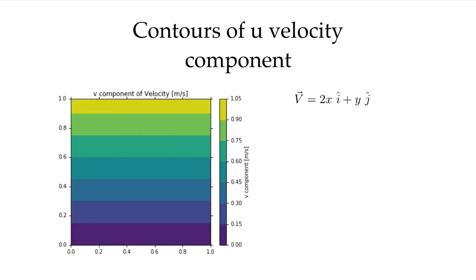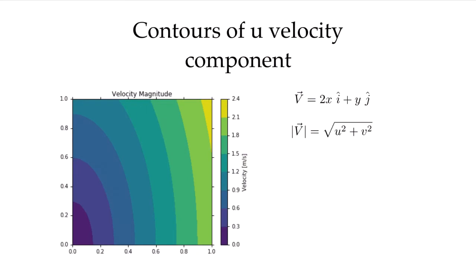There's also a v component of this velocity, and we could similarly do a contour plot of that v component. The function for v is just y, so when y equals 0, the velocity is 0, and as we go up to y equals 1, we get a velocity of 1 at that top surface. We could also calculate the magnitude of the velocity vector — the square root of the sum of the squares of the components — and plot that velocity magnitude. We see the magnitude is 0 down in this corner and greater than 2 up in this corner.